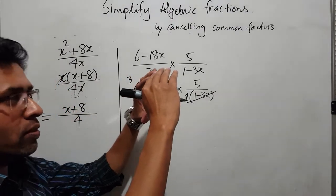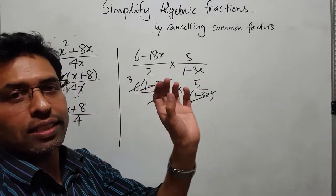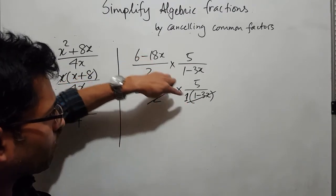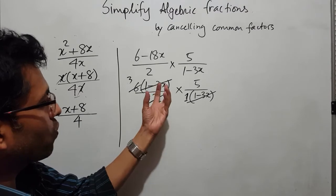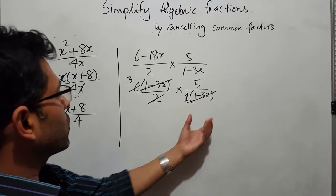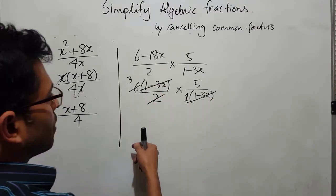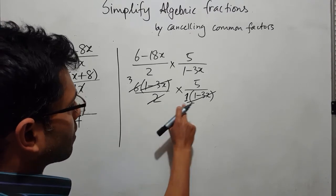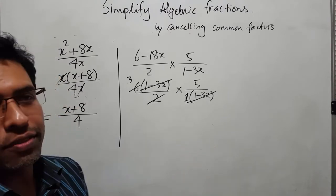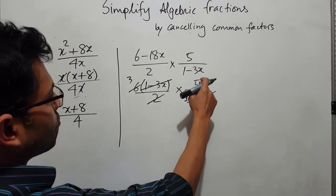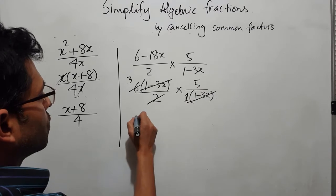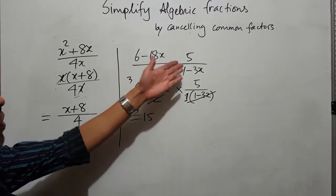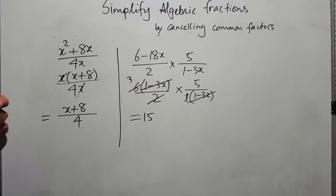We treat (1 minus 3x) as a single element — whatever is inside, it's the same element appearing in both places, so they cancel each other. After cancelling, nothing is left in part of the numerator so we just have 5 times 3, which equals 15. So 15 is the answer for this algebraic fraction after simplifying.